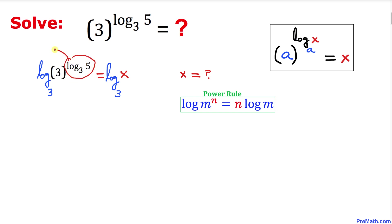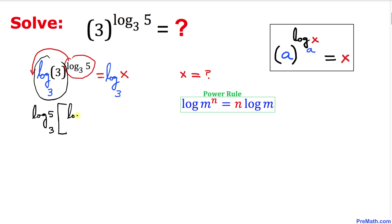The power rule means this exponent gets dragged to the front. So the left side can be written as log of 5 with base 3, times log of 3 with base 3. The right-hand side we leave alone — everything stays the same.